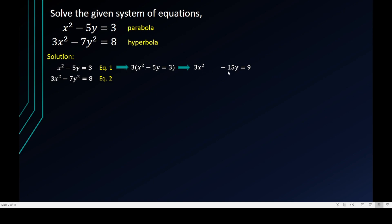I'll multiply the whole of Equation 1 by 3. That gives 3x squared minus 15y equals 9. I'm leaving a space for the y squared term when aligning with Equation 2, since Equation 1 has no y squared term. So the aligned layout has 3x squared matched with 3x squared, negative 7y squared with the space, the y term with the empty spot in Equation 2, and 8 aligned with 9.